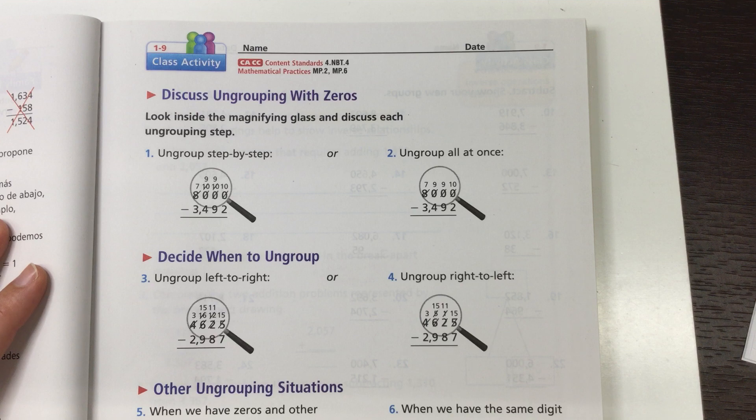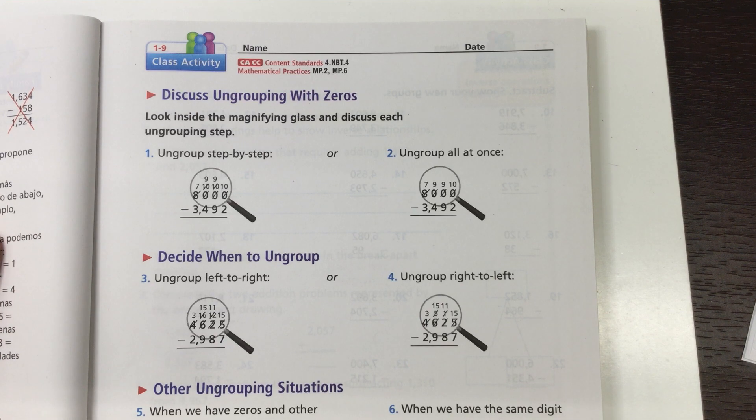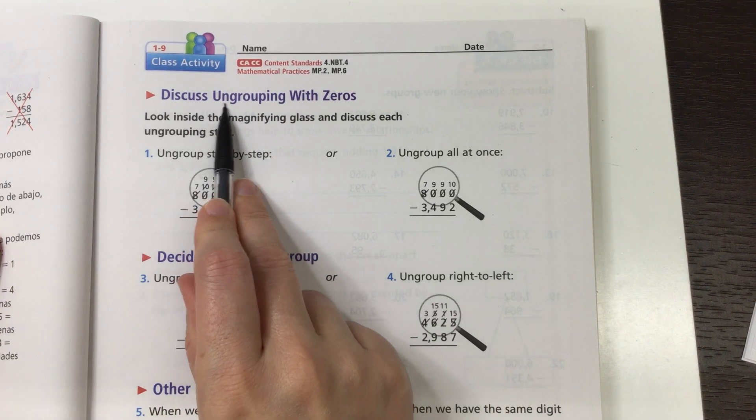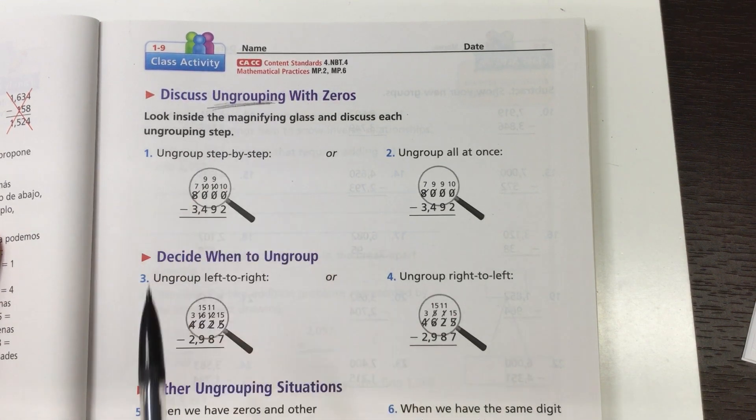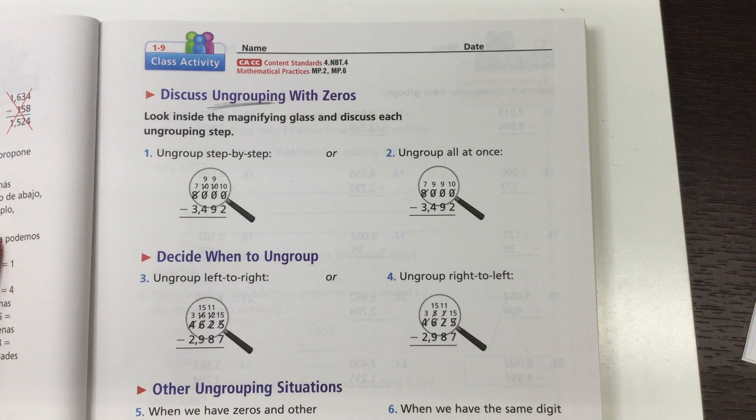So we are switching now from adding large numbers to subtracting large numbers and we're going to be using the word ungroup. You have to hold me true to that because sometimes I accidentally say regroup but ungroup is better because we're taking a number apart. We're undoing a number when we borrow, when we break it down.